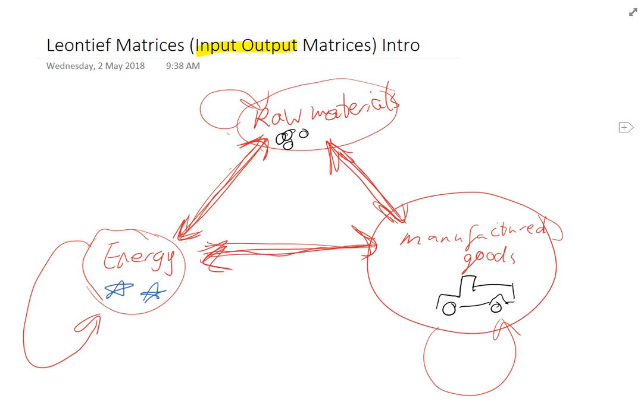In a previous video we looked at an input-output matrix with energy, raw materials, and manufactured goods. We said that to create one of them we need a bunch of the other ones. We can put this complex interplay into a matrix called a consumption matrix.